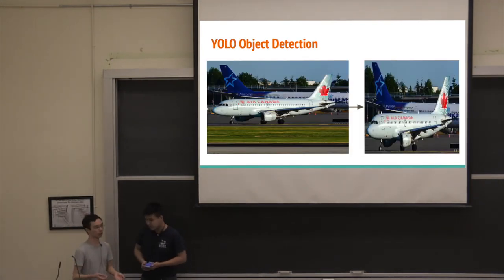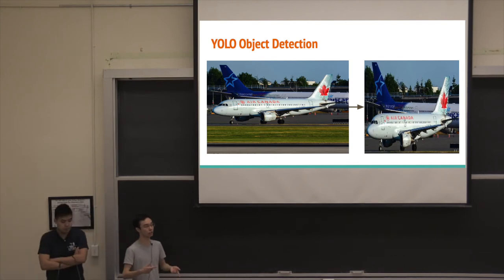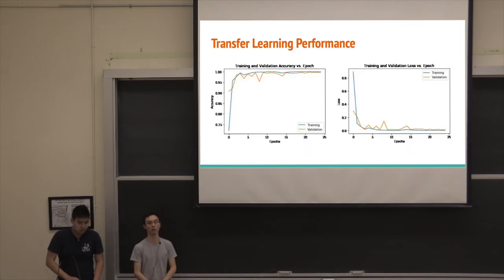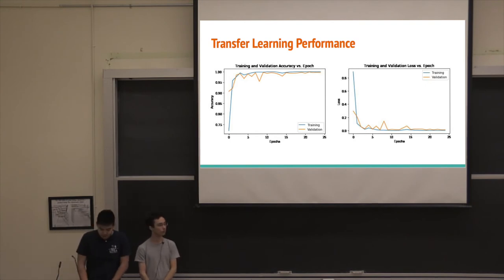We also were thinking of implementing YOLO object detection to intelligently crop our photos. Although, as you can see in the previous slide, our accuracies were already pretty good. So we had a script that could crop the photos before they were fed into the neural network, but we didn't actually implement this into our model. Here are just some graphs showing our performance. So you can see it's a lot more stable, and we're able to hit basically 100 percent quite rapidly.